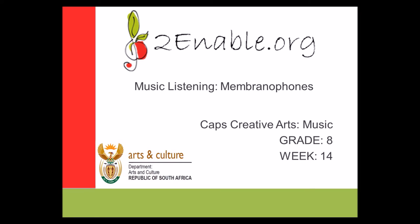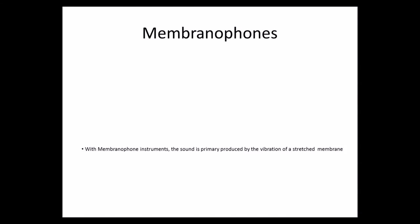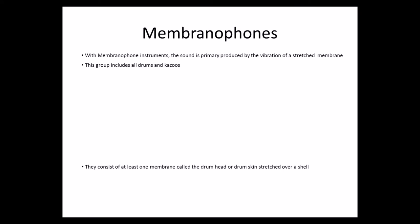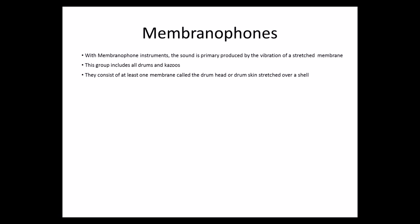Let us see what they hold for us. With membranophone instruments, the sound is primarily produced by the vibration of a stretched membrane. This group includes all drums and kazoos. They consist of at least one membrane, called the drum head or drum skin, stretched over a shell.